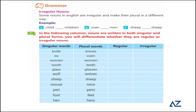Nouns are of two types: irregular nouns and regular nouns. When it comes to making plurals, we discuss regular nouns first. In the following columns, nouns are written in both singular and plural forms. You have to identify which ones are irregular. For example, 'knife' becomes 'knives' — that is irregular. 'Ox' becomes 'oxen' — also irregular. Find out which nouns are regular and which are irregular.